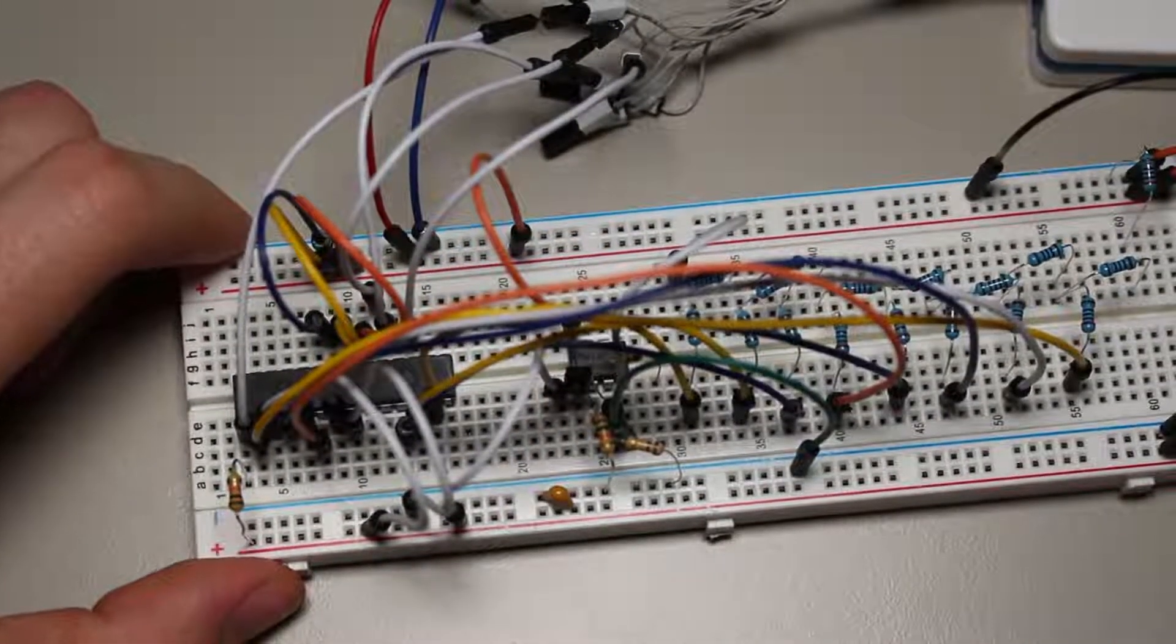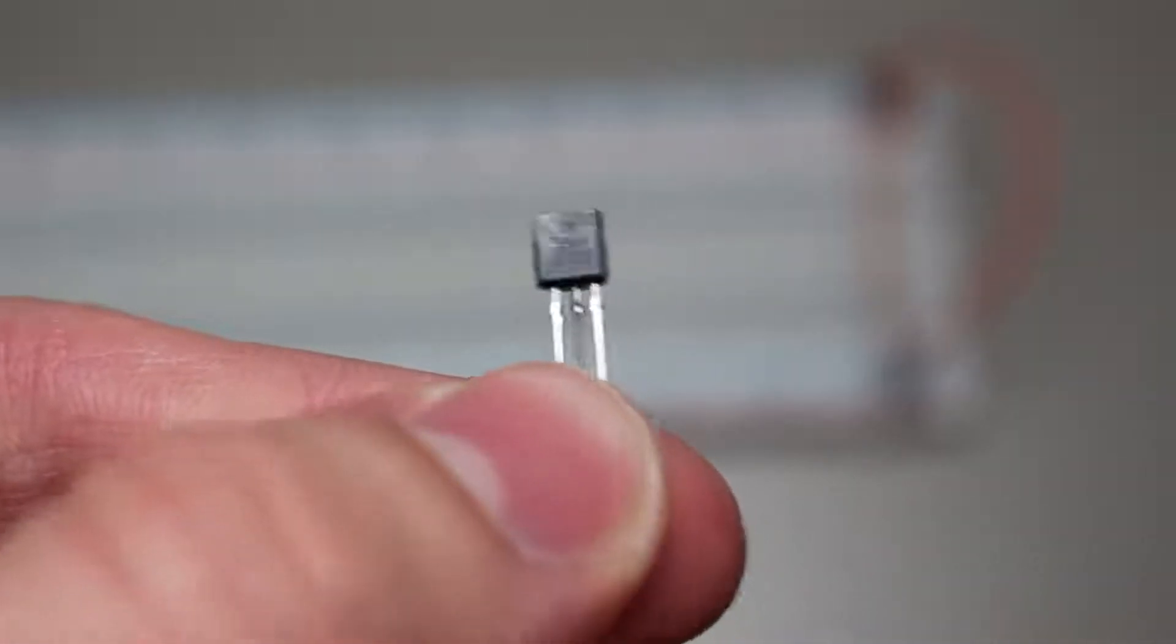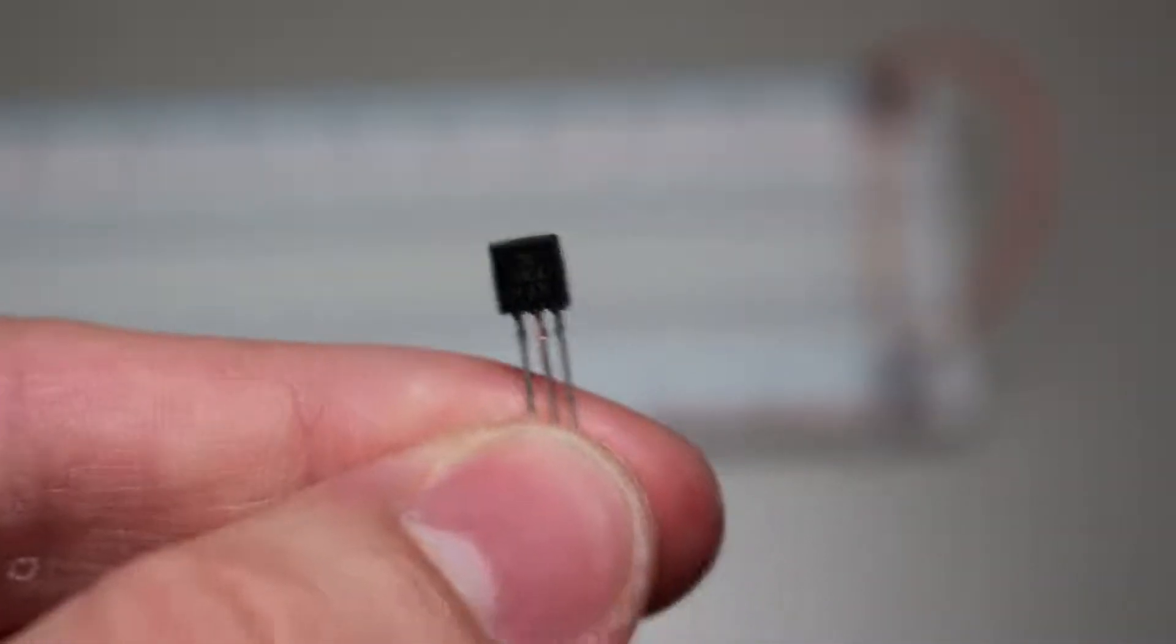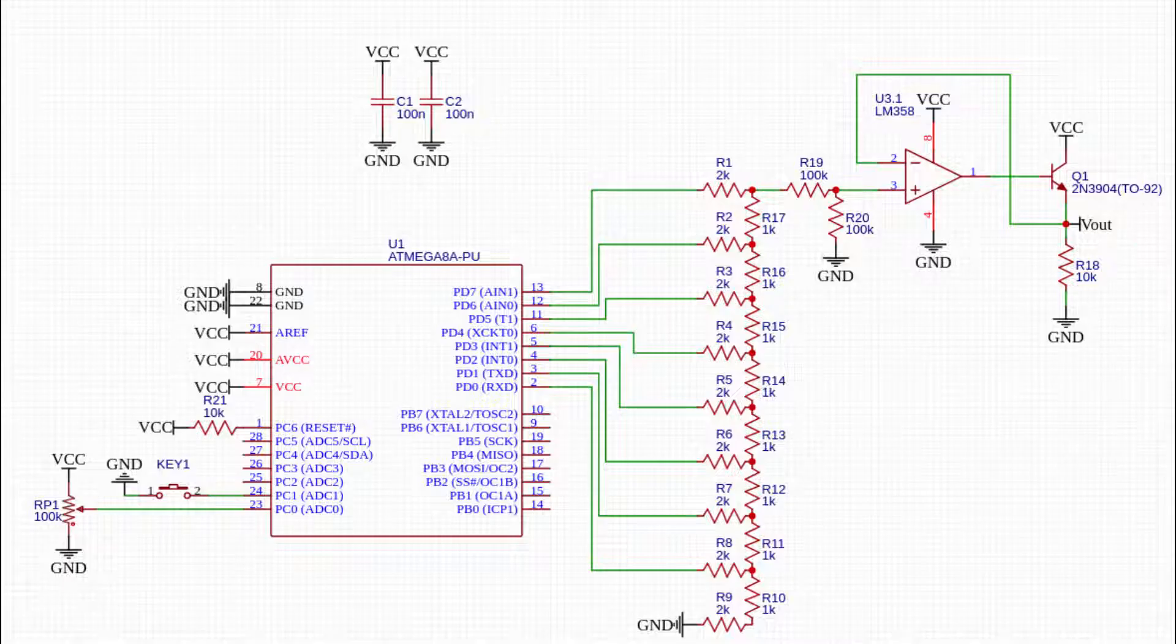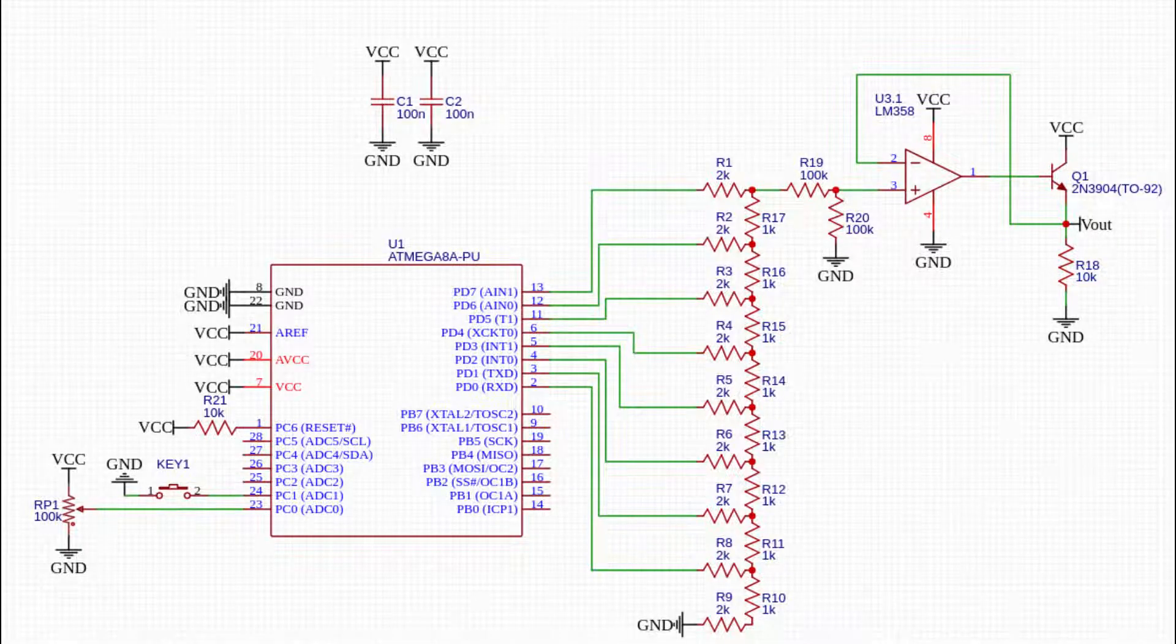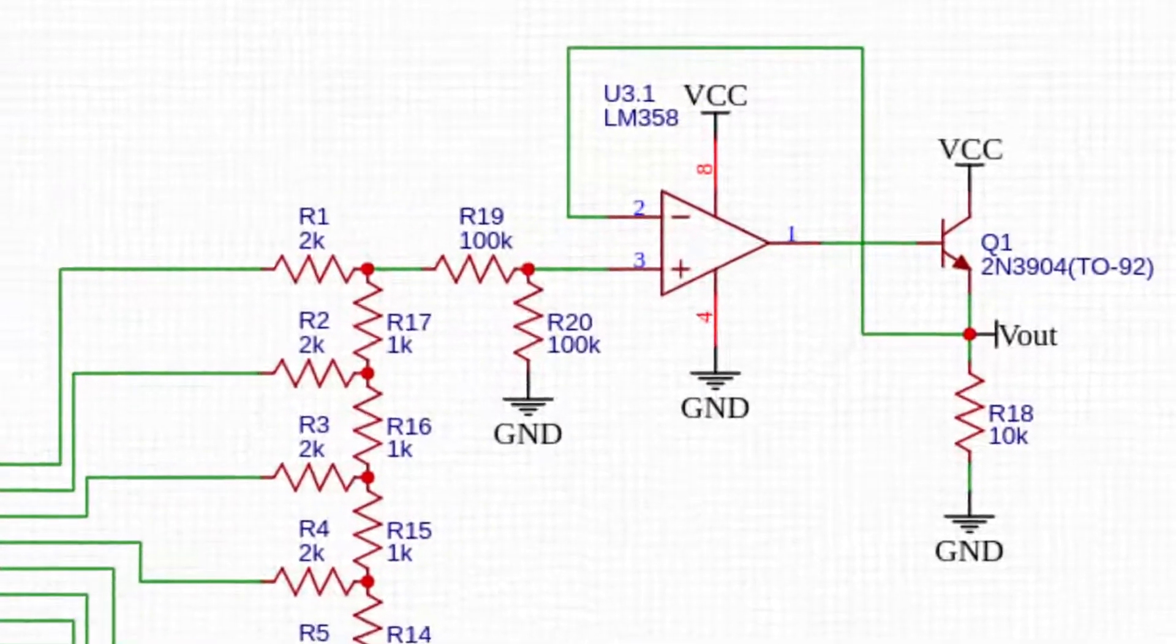One more step to make the op-amp drive any load is an output NPN transistor. The op-amp will maintain the voltage and the transistor will power the load. The schematic is in the description if you are confused on how the circuit is wired up.